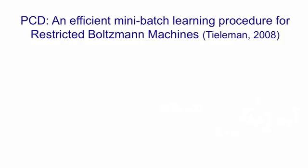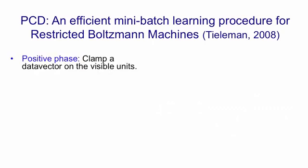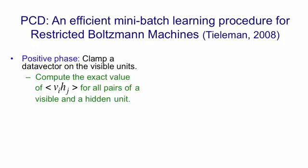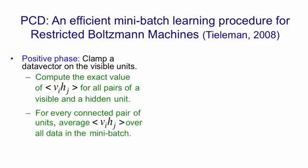If you want to make a good model of a set of binary vectors, then the right algorithm to use for a restricted Boltzmann machine is one introduced by Tielemann in 2008, that's based on earlier work by Neil. In the positive phase, you clamp a data vector on the visible units. You then compute the exact value of the expectation VIHJ for all pairs of a visible and a hidden unit. You can do that because VI is fixed, and you can compute PJ exactly. And then for every connected pair of units, you average the expected value of VIHJ over all the data vectors in the mini-batch.